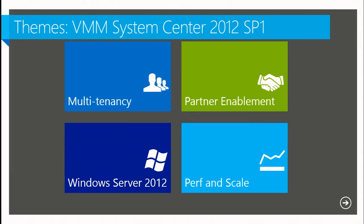SP1 was intended to do two things: get us more ready for the multi-tenant hosted environment, and keep up with the capabilities of Windows Server evolving underneath us. We always focus on performance and infrastructure. We wanted to go to a greater level of scale. In SP1, we can now support up to 1,000 hosts and 25,000 VMs — a significant improvement over the previous release.